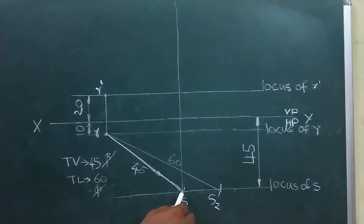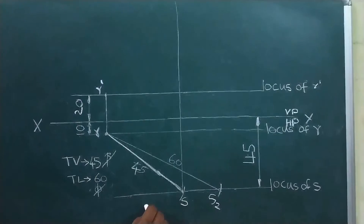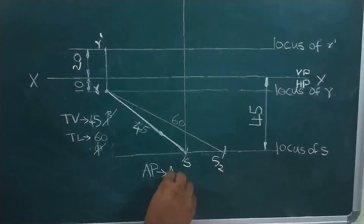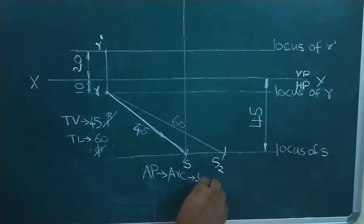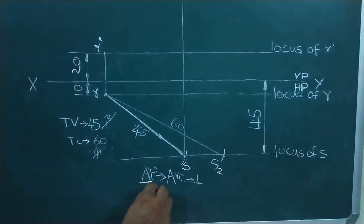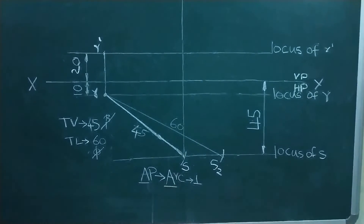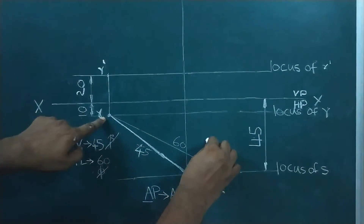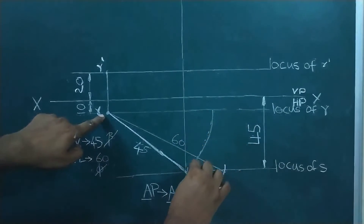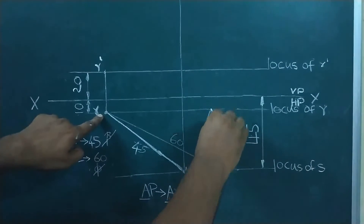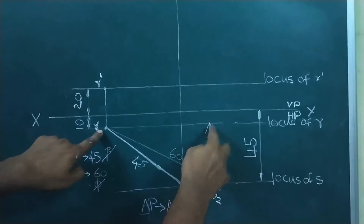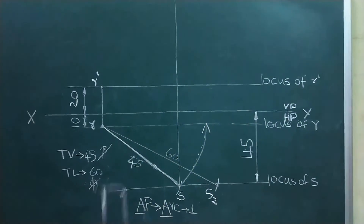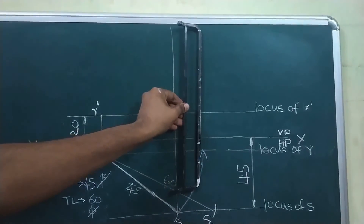RS is the apparent line. If it is an apparent line, we have to make an arc and then draw the perpendicular line. With R as center and R to S as radius, make an arc up to locus of R, then draw a perpendicular line. We don't know the exact location of locus of S-dash, so just extend it.